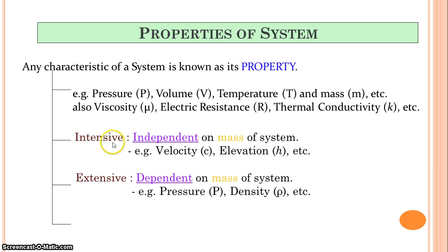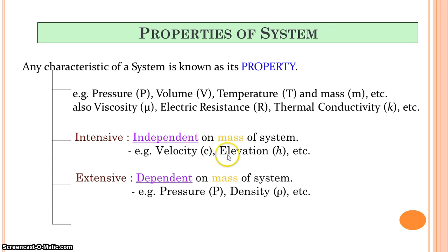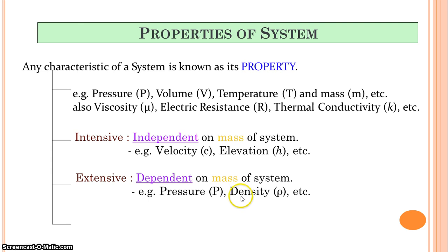Properties can be intensive or extensive. Intensive — 'I' stands for independent — means independent of the mass of the system. Examples are velocity and elevation; elevation or height is obviously not related to mass, so it is an intensive property. Extensive properties are those which are dependent on the mass of the system. Examples include pressure and density — density is mass divided by volume, so mass comes into the picture, making it an extensive property.